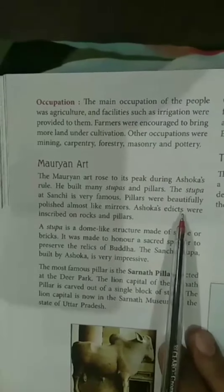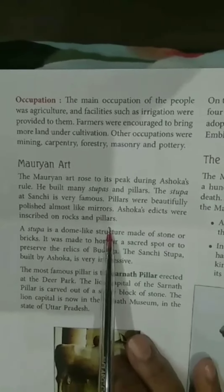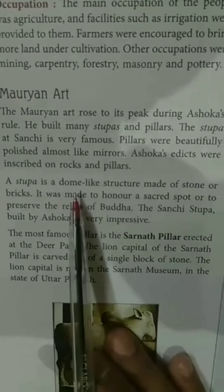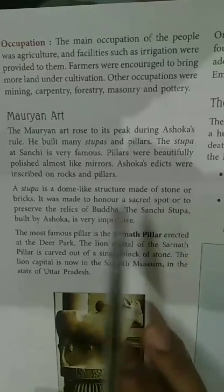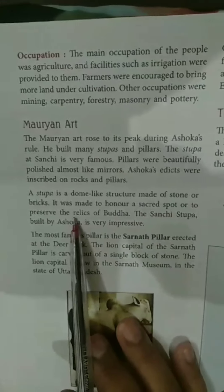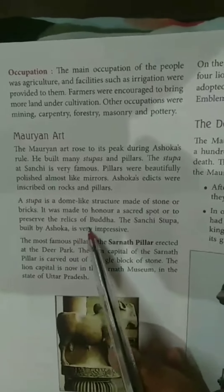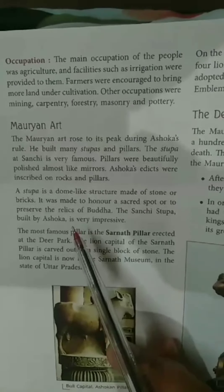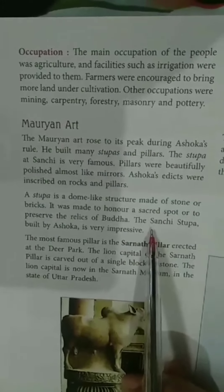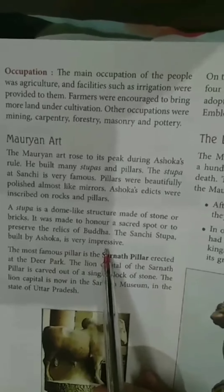Ashoka's edicts were inscribed on rocks and pillars. A stupa is a dome-like structure made out of stone or bricks, built mainly to respect a sacred spot or to preserve the relics of Buddha. Relics are the parts or belongings of a deceased holy person. The Sanchi stupa, built by Ashoka, is very popular.